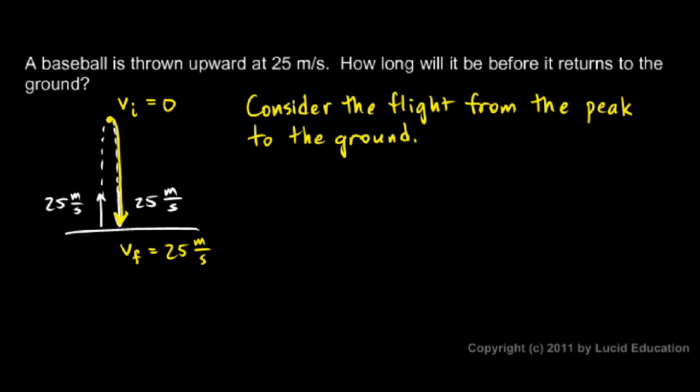You want to think of the final velocity here as the velocity with which it hits. Don't think to yourself it hits the ground and stops, and so the final speed is 0. That's true, it does do that, but we're concerned here with the flight of the baseball, so the final speed will be the speed that it hits the ground with.